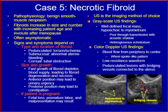Necrotic fibroid pathophysiology: it is a benign smooth muscle neoplasm. Fibroids increase in size and number with increasing patient age and involute after menopause; they are often asymptomatic. Signs and symptoms depend on: (1) type and location — if pedunculated, there is torsion or ischemia; if submucosal, there is abnormal uterine bleeding; if cornual, there is tubal obstruction; (2) size and growth — fast growth depletes blood supply leading to fibroid degeneration and necrosis; anterior position may cause urinary urgency; posterior position may cause constipation; (3) if the patient is pregnant, fetal loss, premature labor, and malpresentation may result.